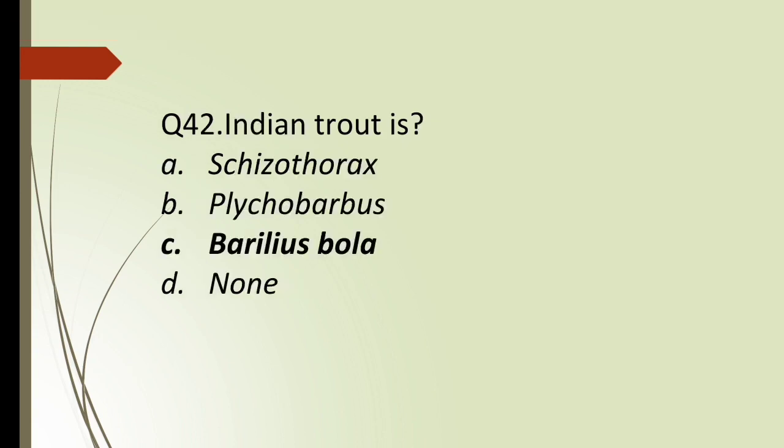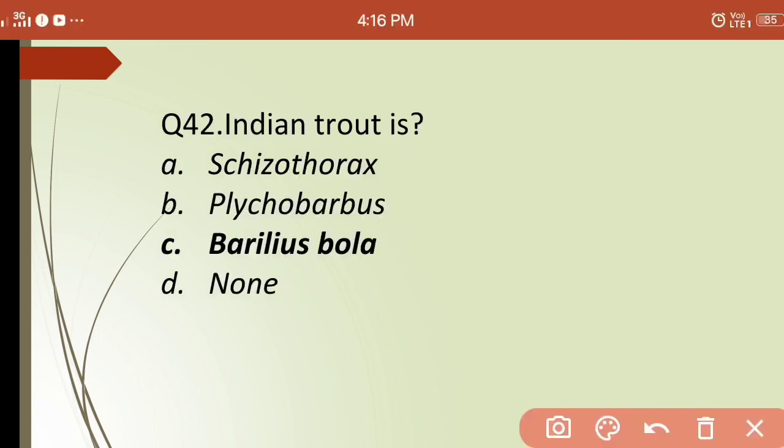Forty-second question: Indian trout is? Options are: (a) Schizothorax, (b) Puntius, (c) Barilius bola, (d) none. The correct answer is (c) Barilius bola — Barilius bola is known as Indian trout.